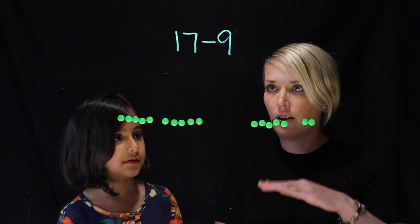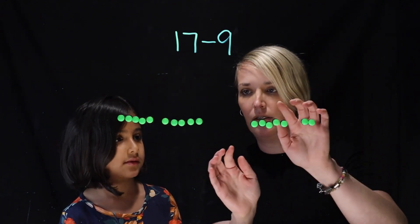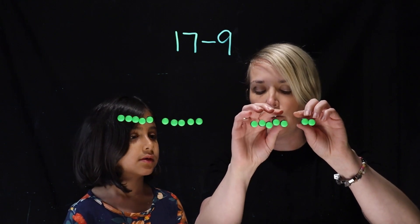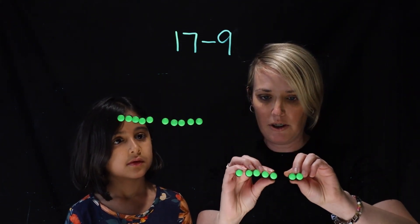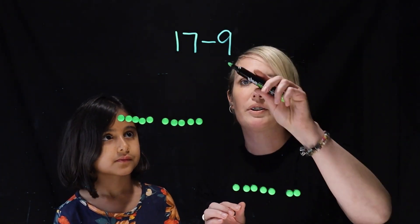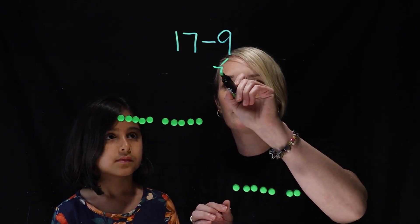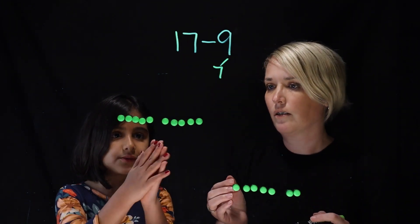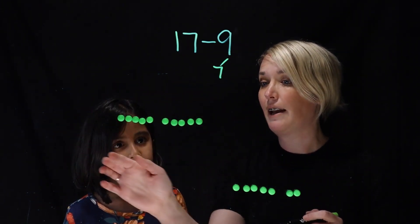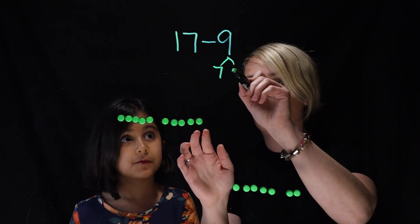Okay, so how did you do 17 minus 9? So I took away 7. Oh, okay. So here's 7, and there's 10, right? So you took away 7, and let me just write this down so that people can see it. So 7. And then I would take away 2. Oh, and then you went 10 minus 2. Would equal 8.